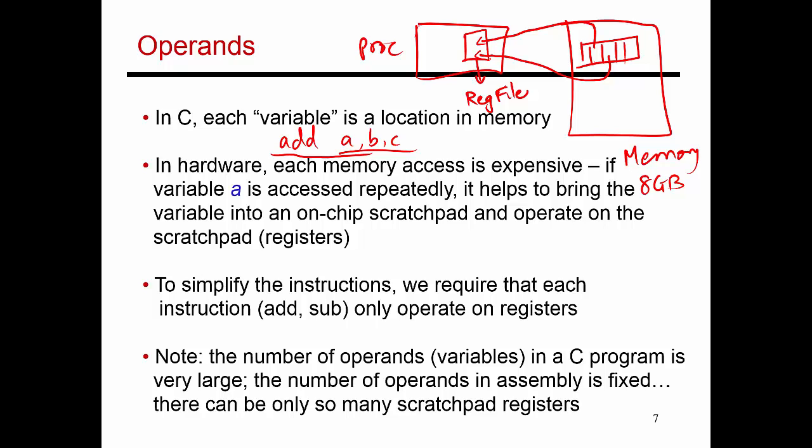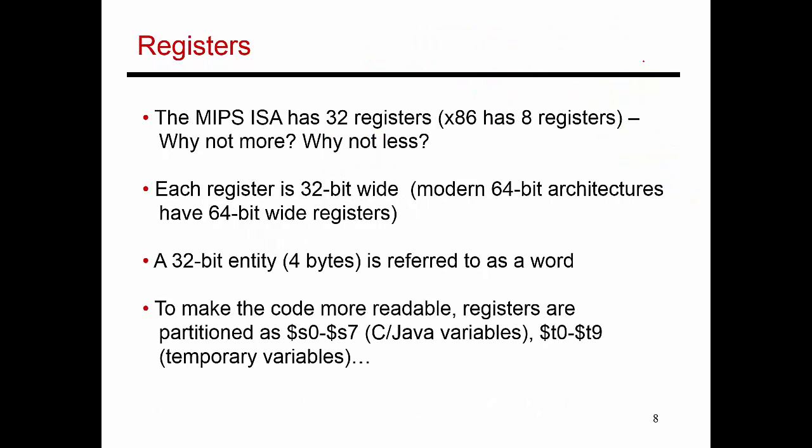Your memory space is much larger. With 8 gigabytes of memory space, you can store billions of different variables. But the register file is on the processor - it's a much smaller structure that has to be accessed very quickly. So you are only provided a few registers. It's like a scratch pad where you can do some computations. When you're done, you can write the result back into a memory location.